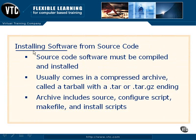When we're installing software from source code, you basically have to get the software compiled, and once we have it compiled, we can actually perform the installation process. Generally, when you download source code, you're going to download it in a tarball or a compressed archive, because source code generally comes with dozens, if not several dozen files that are all used together to create the installation process. The three major things we're going to have here are our configure scripts, our make files, and our installation scripts, and those together actually make up the source code itself.